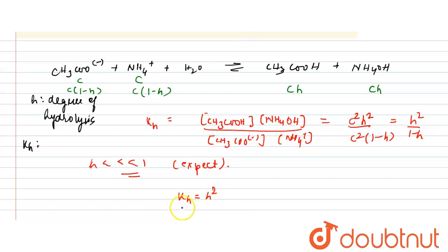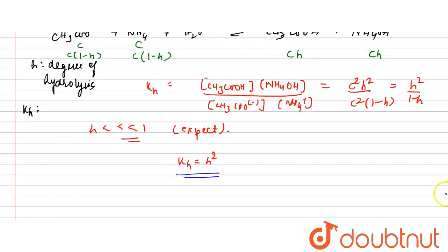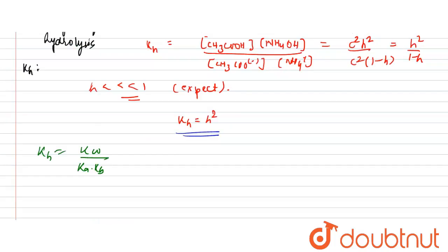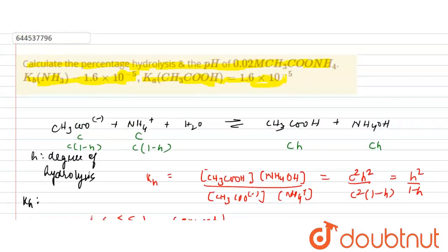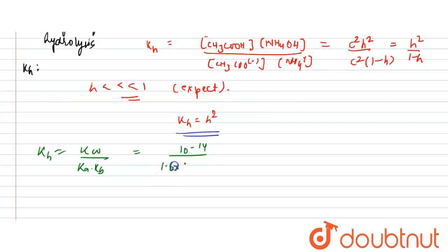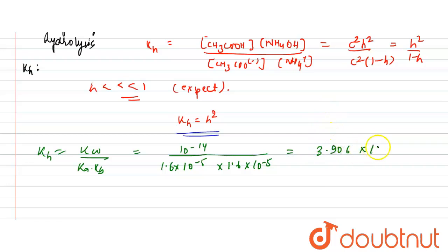Now, how do we calculate KH? The hydrolysis constant KH equals Kw divided by (Ka × Kb). This is the important formula for the salt hydrolysis of a weak acid and weak base. Kw is 10⁻¹⁴, and both Ka and Kb are given as 1.6×10⁻⁵. So KH = 10⁻¹⁴ / (1.6×10⁻⁵ × 1.6×10⁻⁵), which gives KH = 3.906×10⁻⁴.